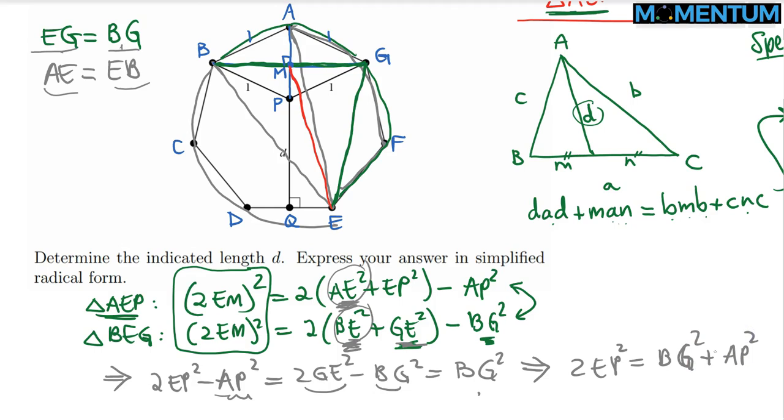Now, the good news is BG squared and AP squared, you can split them as follows. I can split BG squared as BG squared over 4, BG squared over 4, BG squared over 4, and BG squared over 4. And do the same thing for AP squared as well: AP squared over 4 plus AP squared over 4 plus AP squared over 4 plus AP squared over 4.